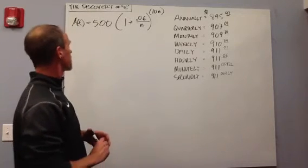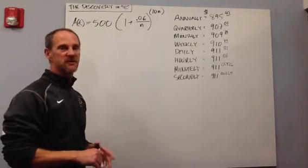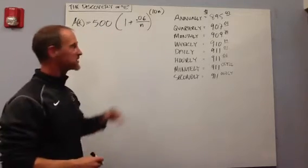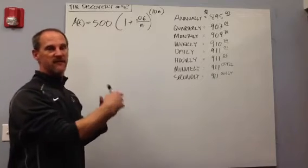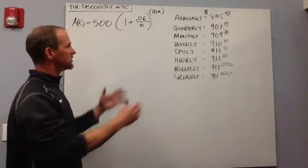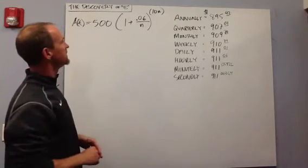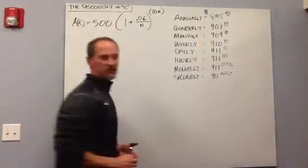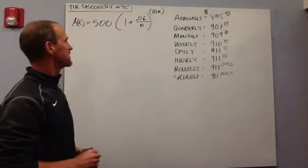Starting with a concrete example: suppose we have $500 and we put it in the bank for 10 years. At the end of the first year we have $530 because it's 6% interest. At the end of the next year, we have interest on our $500 but also interest on that $30. So after 10 years we've received 10 interest payments, and our total amount would be about $895.42.